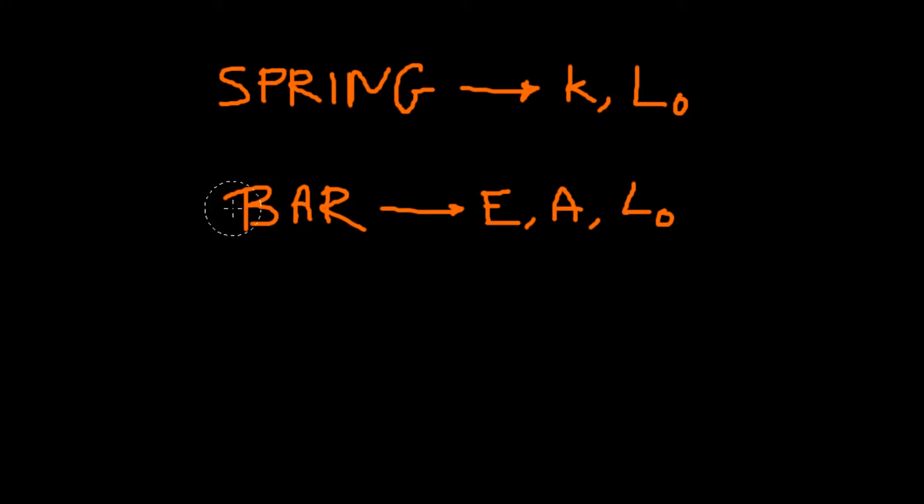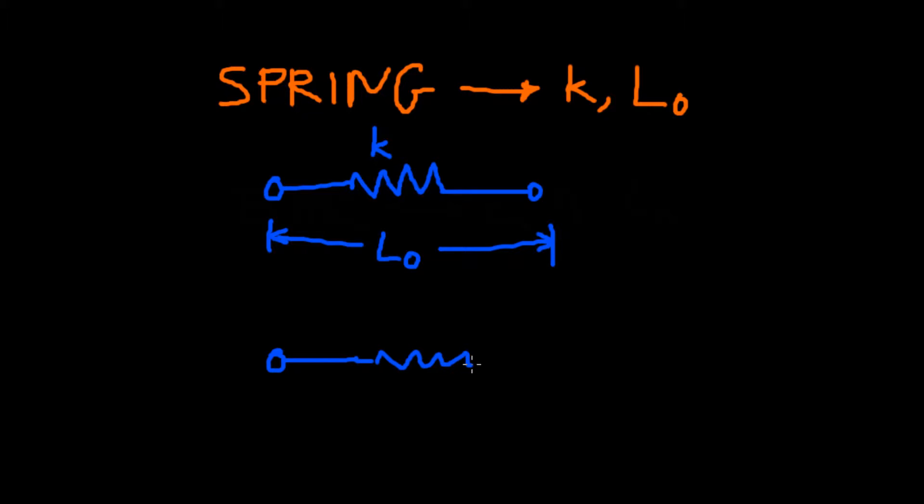So let's start with a spring. So a spring can be represented by the squiggly line and it has an initial length of L0 and a spring constant k. So upon stretching it, we apply a force so it becomes longer and the new length is L.